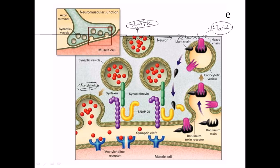You need to bring synaptobrevin and syntaxin close together. After that, the accessory protein SNAP25 is also required. SNAP25 helps bring the vesicle very close to the membrane so they can dock and acetylcholine can be released. Once the vesicle is fused, the neurotransmitter is released and binds with the acetylcholine receptor on the surface of the muscle cell, triggering downstream signaling and generating muscle contraction.